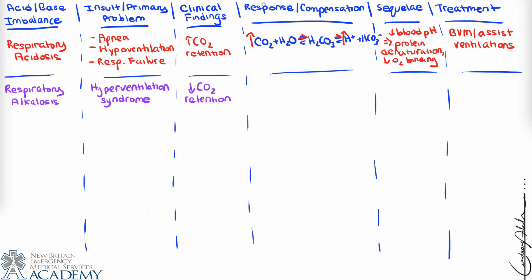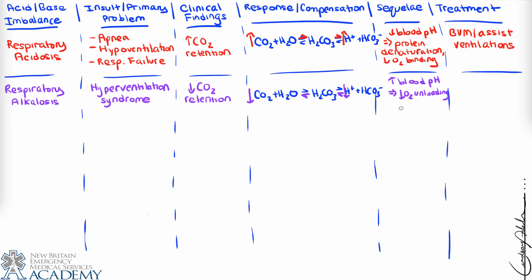Because the patient is breathing so fast, they're exhaling extra CO2, effectively decreasing CO2 retention. This decrease in CO2 pulls the reaction toward producing more CO2: carbonic acid dissociates into CO2 and H2O, which means more bicarbonate and hydrogen ions combine to form carbonic acid. This results in a decrease in hydrogen ion concentration, or an increase in blood pH.